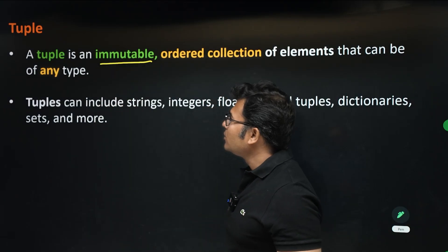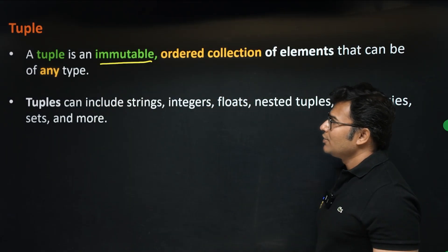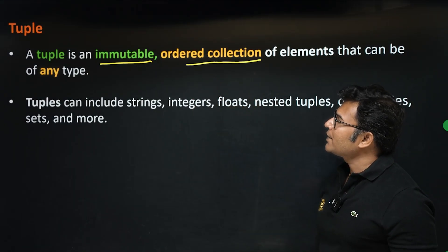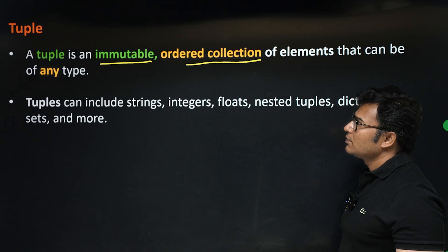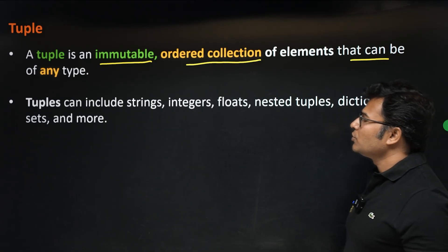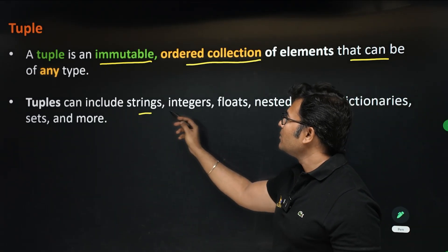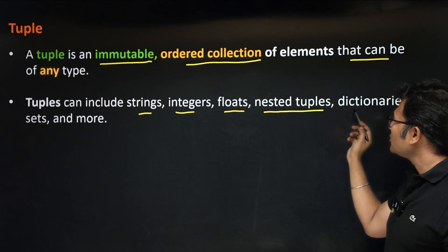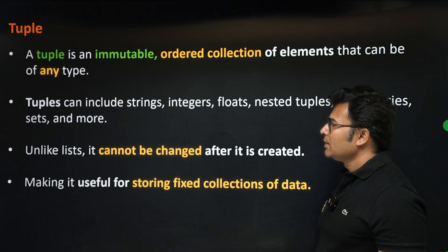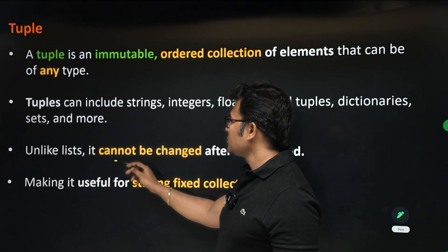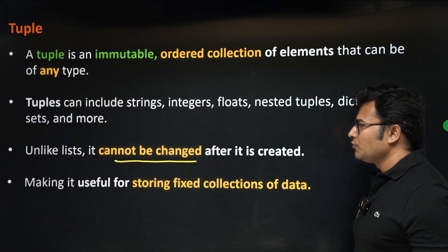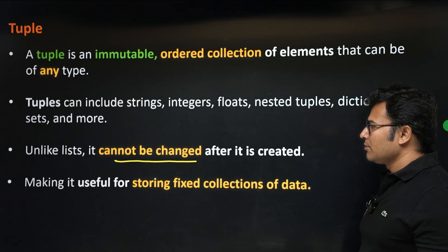Tuples are immutable — immutable means once you create it you cannot change it. If you are trying to add something to it, a new tuple will be created. Tuples are ordered, meaning you can access the elements by using indices, and elements can be of any type: strings, integers, floats, nested tuples, dictionaries, or anything.